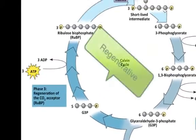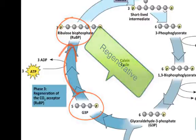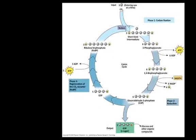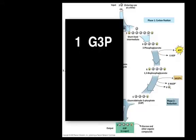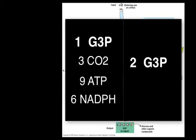The last phase is called the regenerative phase, which is a series of complex reactions that restore the G3Ps back into RuBP to continue the cycle. To do some accounting: for one G3P, it took three CO2s, nine ATPs, and six NADPHs. To make glucose, simply multiply all that by two — because two G3Ps are needed to make one glucose.